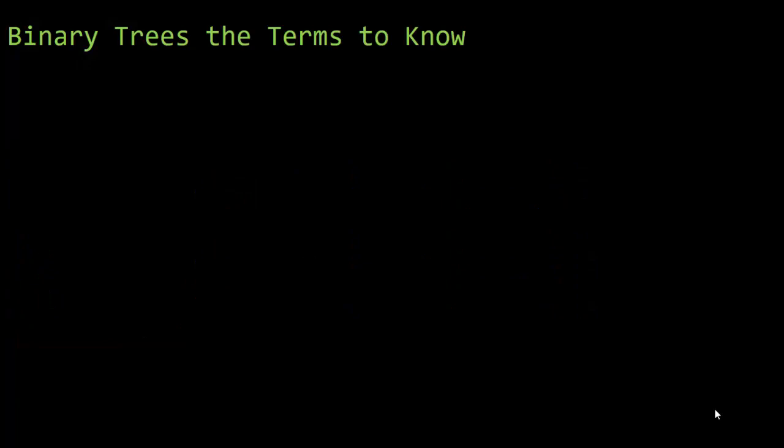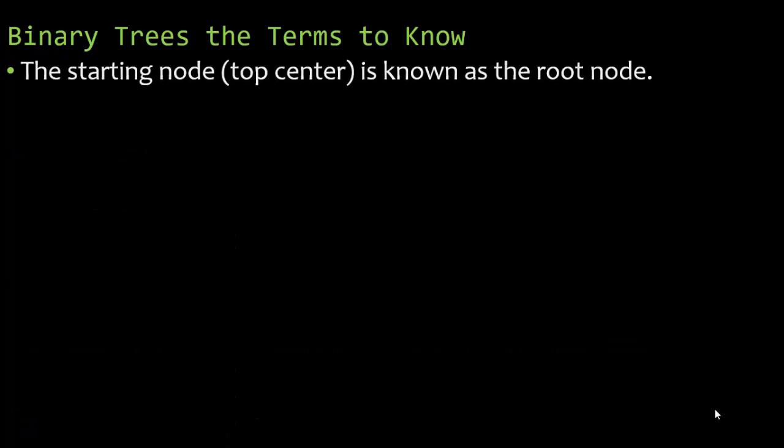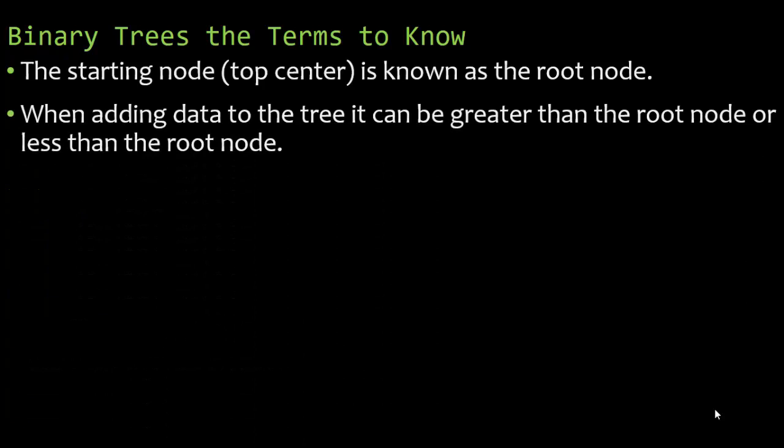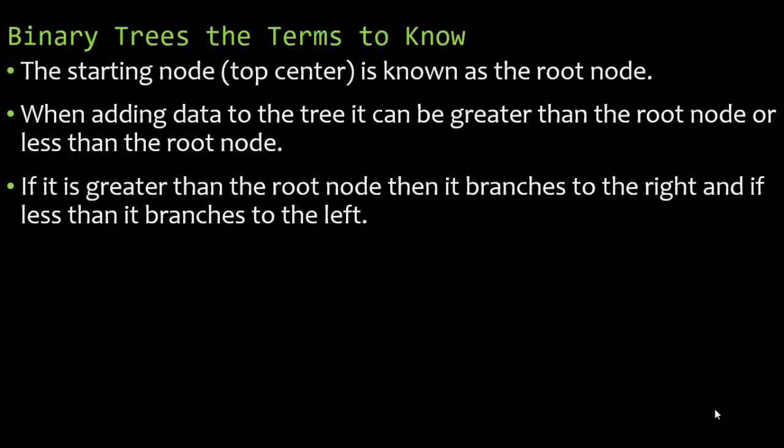If you've watched any of my videos in the past, you know I like to talk about the terms that you need to know — it makes the content much easier to understand. So let's review some brief terms. The starting node is what people refer to as the root node; it's in the top center. When adding data to the tree, it can be greater than or less than the root node. If it's greater, it branches to the right; if it's less, it branches to the left.